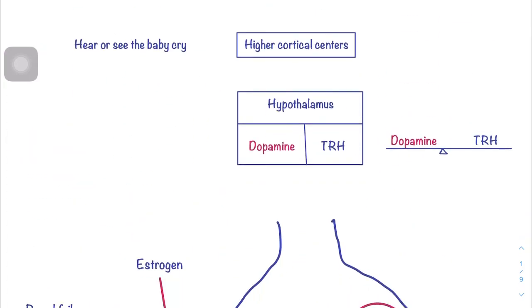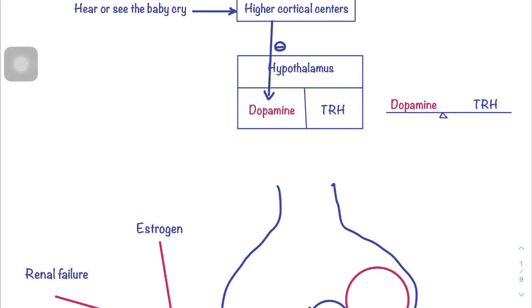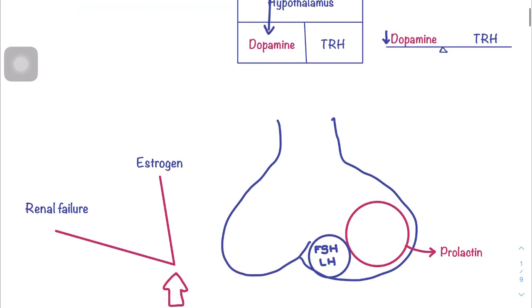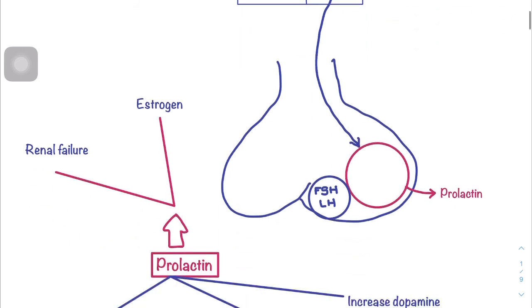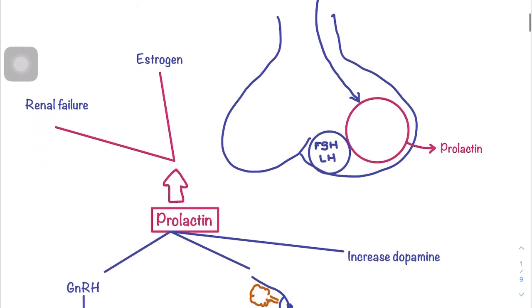The release of prolactin is influenced by higher cortex centers: when a mother hears or sees her baby cry, dopamine inhibition occurs. When dopamine decreases while TRH remains the same, the balance shifts. This is important because dopamine inhibits prolactin release and TRH stimulates it, so TRH now stimulates these cells to release prolactin.